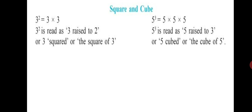3 raised to the power of 2 is read as the square of 3. Similarly, 5 raised to the power of 3 is equal to 5 into 5 into 5 — 5 is multiplied by itself 3 times. Where 5 is the base and 3 is the index. It is read as 5 raised to the power of 3, also called 5 cubed or the cube of 5. When the index is 3, we say that it is the cube of that number.